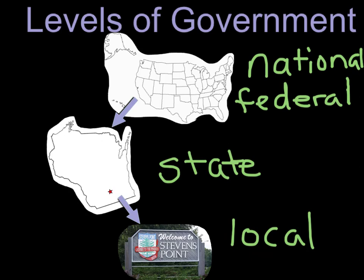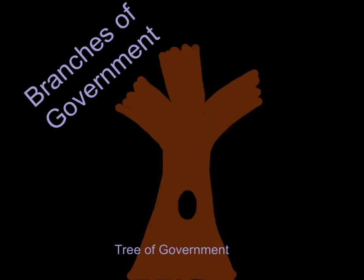Next, we're going to go on and talk about the three branches of government here in the United States. When it comes to thinking about the branches of government, it really does help to think of a tree. You've got the whole big entirety of the tree and it's all one thing, but as you go up you can see it divides off into one, two, three branches. They're still a part of the tree, but they're their own thing. They're all a part of the same government doing the same big job, but just like the branches on the tree, they're each going in their own direction.